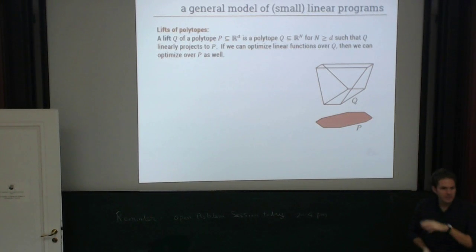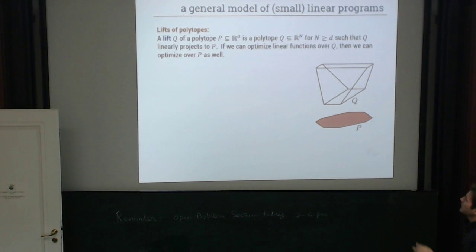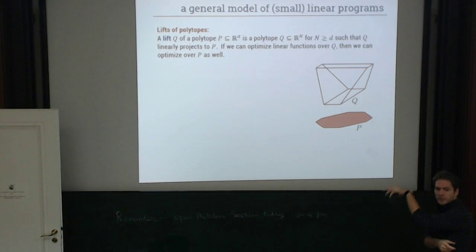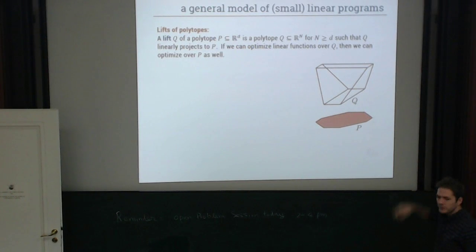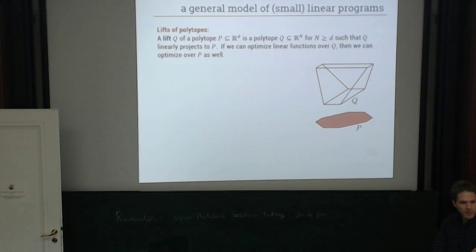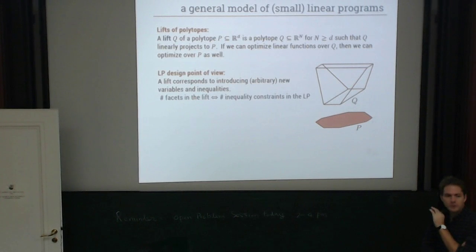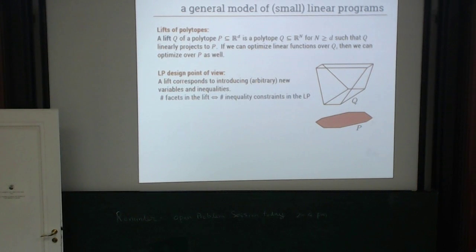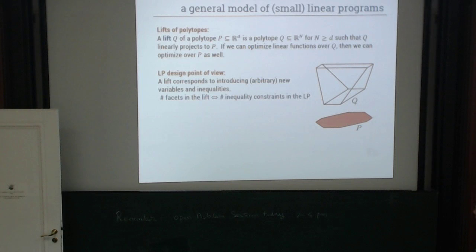The basic idea is that we have a polytope P that we care about — say, the cut polytope or the TSP polytope. A lift of P is a polytope Q in some higher number of dimensions: P is in D dimensions and Q is in N dimensions, such that Q linearly projects to P. The idea of a lift is that if we can optimize linear functionals over Q, then we can also optimize them over P. So even if P is complicated, maybe there is a lift Q that's much simpler.